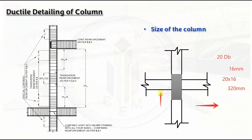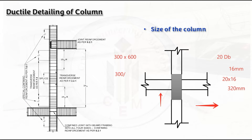Similarly, in the y-direction, consider the beams passing through the column in that direction, find the largest longitudinal bar diameter, and calculate 20dB accordingly. To check the aspect ratio, take a column of 300 × 600 mm: 300 divided by 600 equals 0.5, which is greater than 0.45 — so this column satisfies the aspect ratio requirement as per IS 13920-2016.